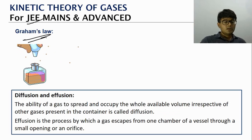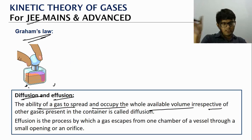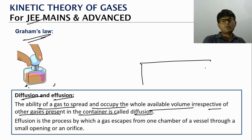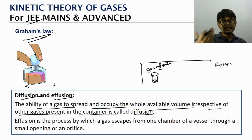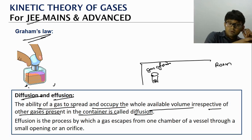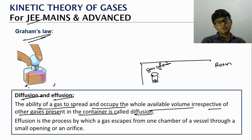The next macro behavior is the diffusion law, also called Graham's law of diffusion. There are two related phenomena: diffusion and effusion. Diffusion is the ability of a gas to spread and occupy the entire available volume irrespective of other gases present. For example, an LPG leak in a kitchen corner can be smelled from the living room due to diffusion.